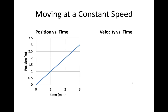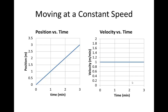On the position time graph, if he's moving at a constant speed, traveling between zero and three meters in three minutes, the slope of a position time graph gives you the velocity. So we should be looking at a line at one meter per minute — and that's what we've got, a horizontal line at one meter per minute.